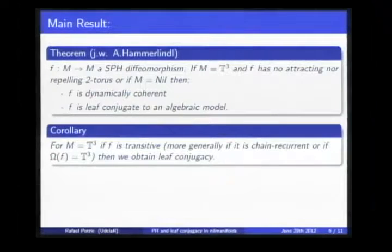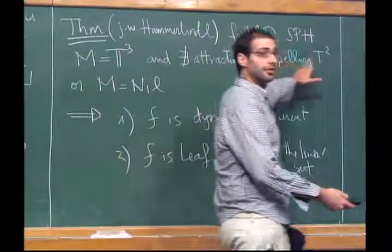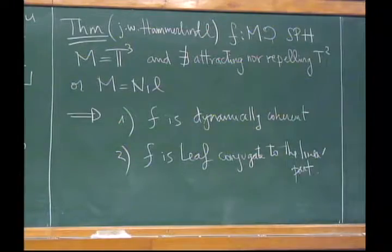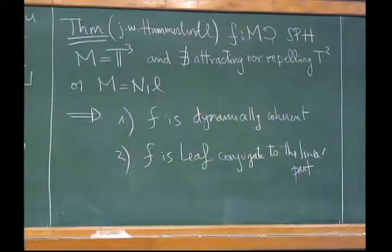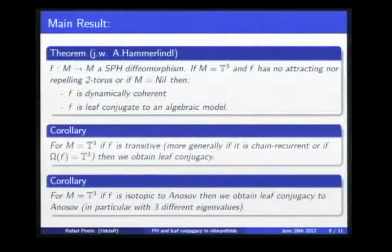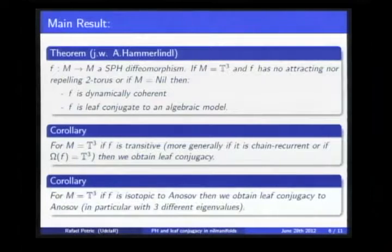Let me state some corollaries. The first one is that in the case where f is transitive, the attracting or repelling torus cannot exist, so we get the full result. Also interesting is that in the isotopy class of an Anosov diffeomorphism, since we can prove these tori are incompressible, we also cannot have this situation, so we get this result in those cases.